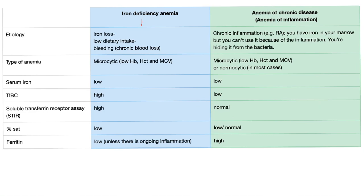Here is iron deficiency anemia and here is anemia of chronic disease — we have talked about them in detail in my hematology playlist. Iron deficiency anemia causes iron loss, low dietary intake, and bleeding. In anemia of chronic disease, caused by chronic inflammation such as rheumatoid arthritis, the mechanism involves trying to hide the iron away from the inflammation or from the bacteria.